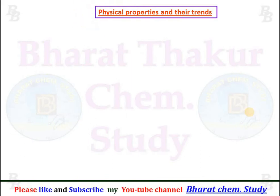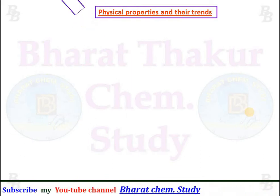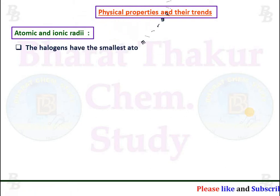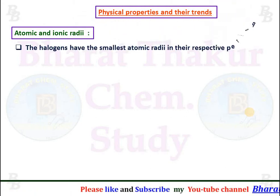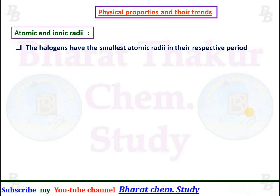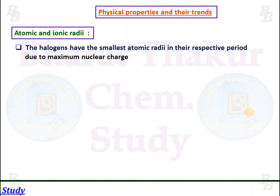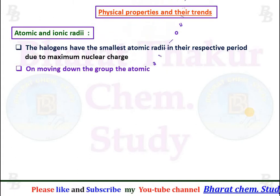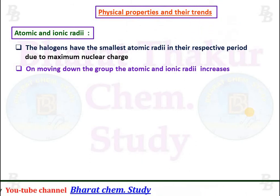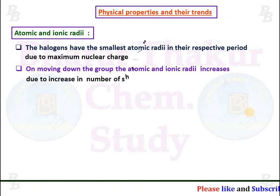Physical properties and their trends. First, atomic and ionic radii: halogens have the smallest atomic radii in their respective periods due to maximum nuclear charge. On moving down the group, the atomic and ionic radii increase due to an increase in the number of shells.